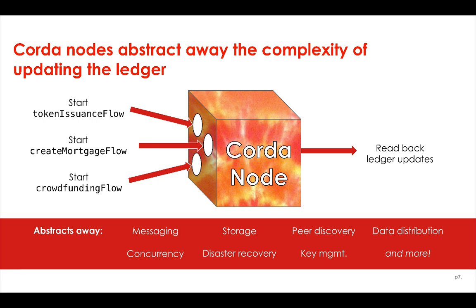What are these nodes that sit on the network? We can think of Corda nodes as magic blockchain boxes. They provide user-defined flows that allow the node to perform some action, usually to update the ledger with a single click. They also provide the ability to read back data from the ledger to see the results of executing these flows. The advantage of the node is that all the horrors of distributed systems, cryptography, and data management are completely hidden from the user — so you don't have to worry about messaging, storage, peer discovery, data distribution, concurrency, disaster recovery, or signing. All of that is abstracted away by the node software.